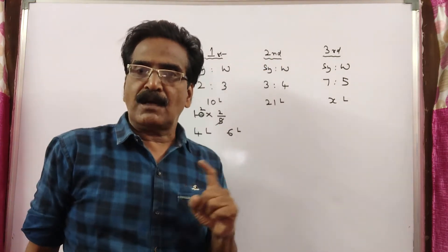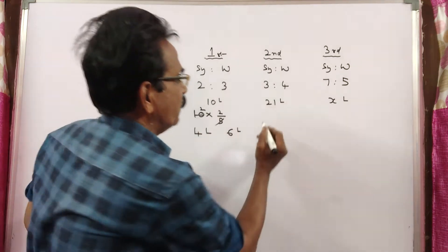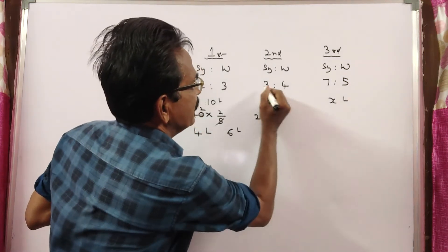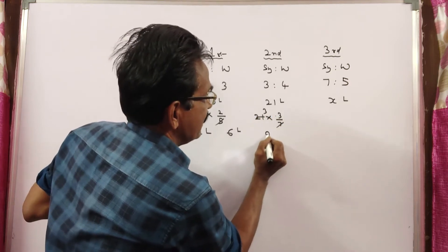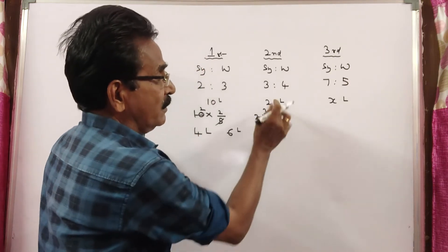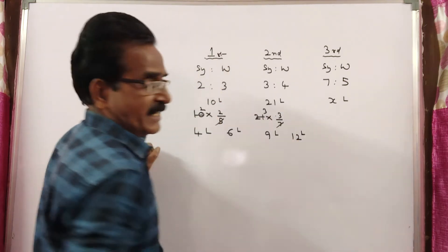From the second bottle, we have drawn 21 liters. How much syrup is drawn? 21 times 3/7, which equals 9 liters of syrup. 21 minus 9 equals 12 liters of water is drawn.